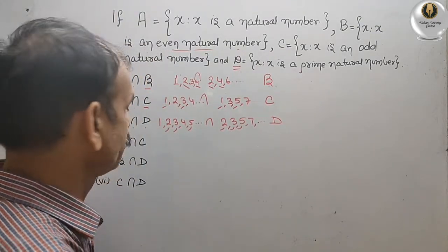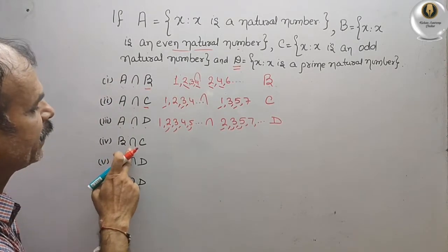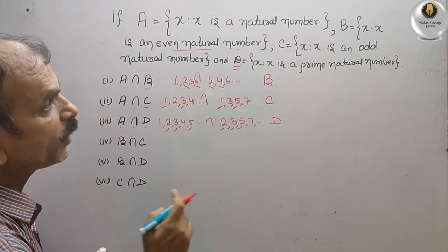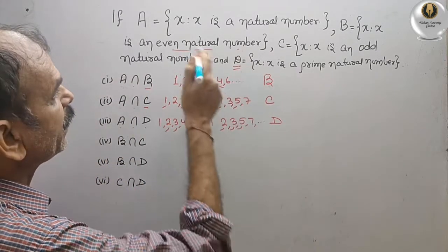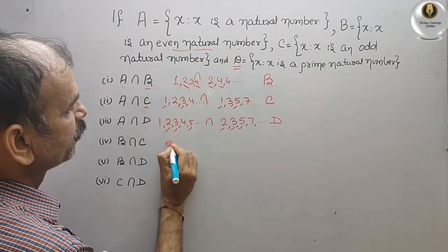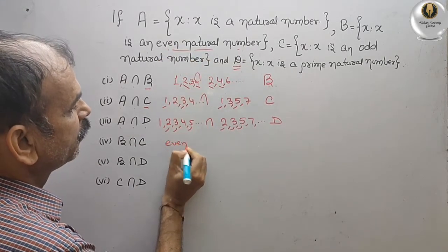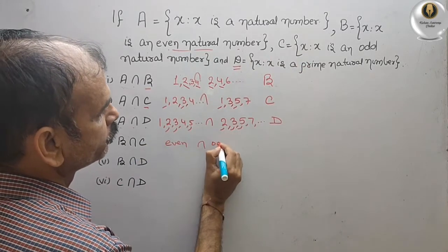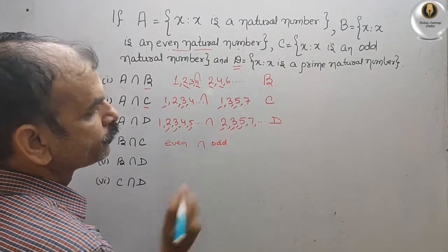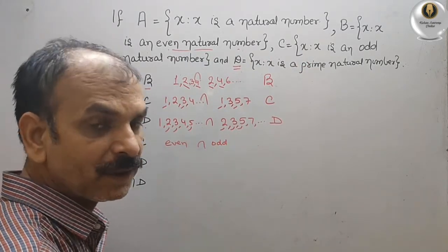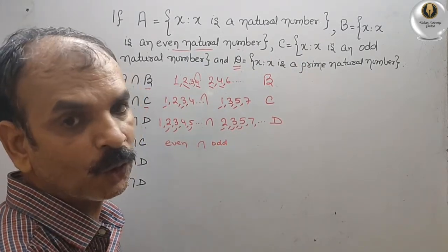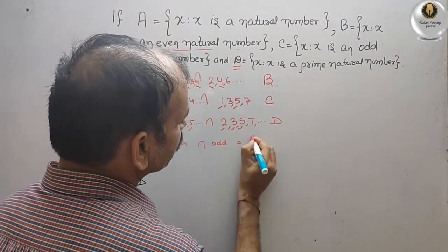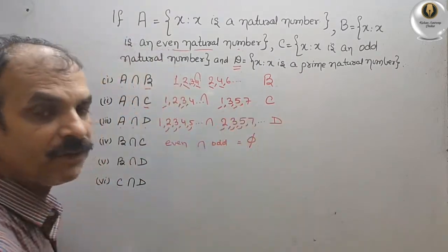Next, B intersect C. You can see B contains even numbers and C contains odd numbers. Whether they will intersect? No. So we will simply write here — it is an empty set.